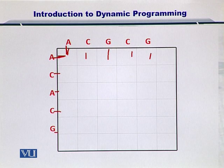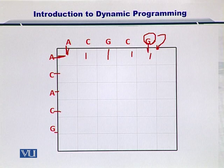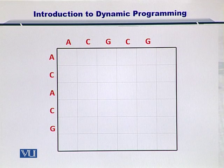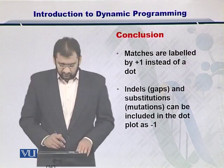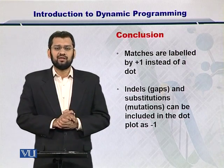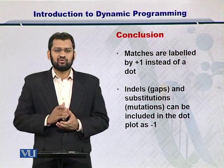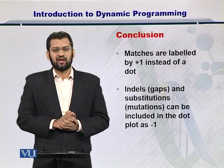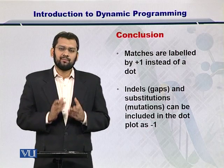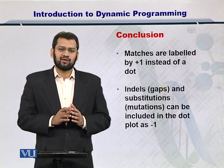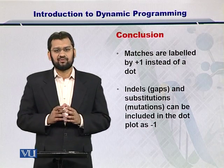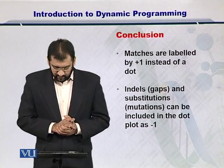Just to review: earlier, these nucleotides were positioned at the corners, but now they are positioned in the middle of the grid points. The only difference between this form and the previous one is the position of the sequences. After positioning the sequences in the middle of the grid points, we also incorporate insertions, deletions, and mutations, or substitutions. Matches are indicated by plus one, and mismatches and substitutions are indicated by minus one. Gaps can also be incorporated in such a plot.